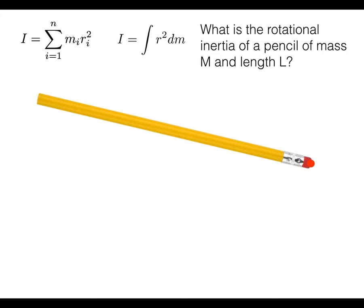We'll assume that the mass of the pencil is capital M and the length is L, and we'll further assume that the mass is uniformly distributed over the length of the pencil. It's possible that the eraser might have a lower density than the rest of the pencil, but let's assume it doesn't. I've been careful to pick a pencil that isn't sharpened, because if the end were sharpened the mass would not be uniform over the length.